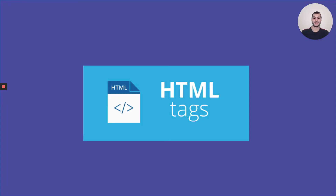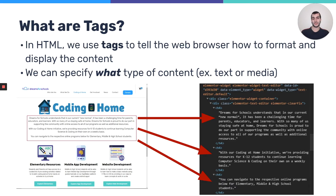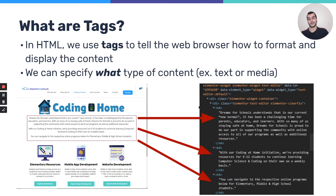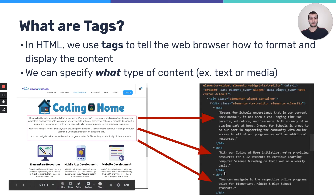Now let's get into some HTML tags — this is our first concept of HTML. Tags are very essential to HTML. In HTML, we use tags to tell the web browser how to format and display the content. We can specify what type of content, whether it's text, media — meaning pictures, images, videos, or GIFs. Everything in HTML is written inside of a tag. This is very important — whenever you write anything in HTML, you always have to write a tag first. For example, on the Dreams4Schools website, this chunk of code is actually translated visually for us, appearing nice and clean and organized because we're using HTML code.